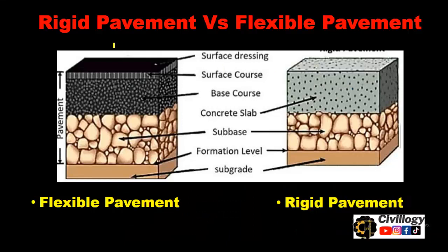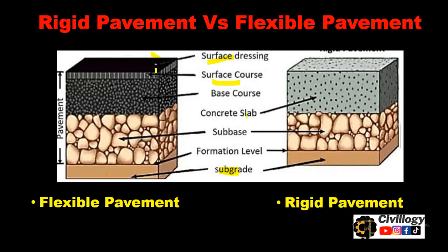Before we start the comparison, look at the structure of flexible pavement and rigid pavement. In flexible pavement, the lower layer is called the subgrade — it could be natural or improved subgrade. If the bearing capacity of soil is not good, the soil has to be replaced with a good material called improved subgrade. Then comes the formation level, sub base, base course, surface course, and surface dressing. Flexible pavement has about five layers.